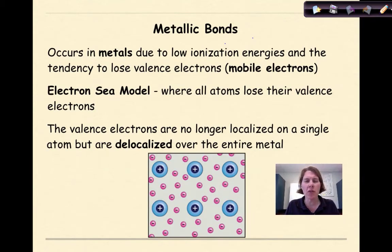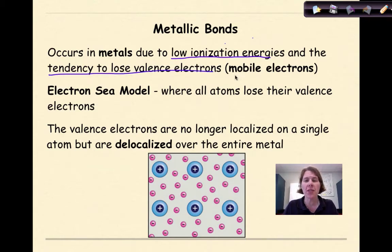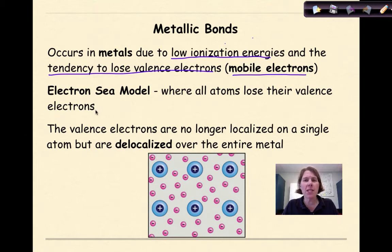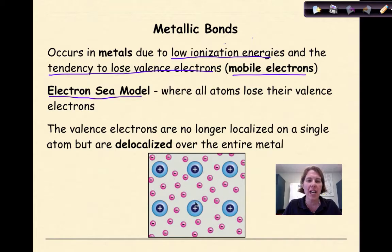Let's talk about metallic bonds first. Metallic bonds are basically the bonds that are found in metal. When we talk about metals, we know that they have low ionization energies and they tend to lose valence electrons, so the electrons are basically mobile. The easiest way to visualize this is in terms of the electron sea model, or sea of electrons, where all atoms lose their valence electrons.